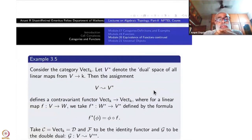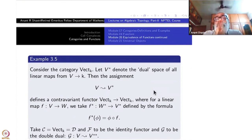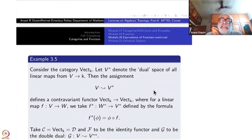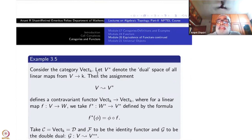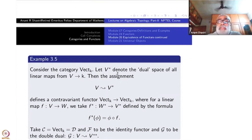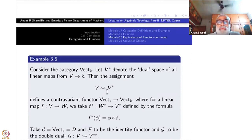Now here is the example I wanted to explain, which is easier — vector spaces, since you have learned linear algebra. Consider the category Vect_k, where k is a field: the category of all vector spaces over k and linear maps. In that category, you can define V star as the dual space of linear maps from V to k. The assignment V to V star is itself a contravariant functor — not just an assignment but a contravariant functor on this same category.